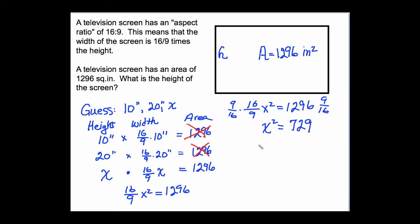And there we have X squared equals 729. And if we square root each side, we will get X equals the square root of 729. And that equals 27. So 27 is the height of the screen. And that's what we were looking for.